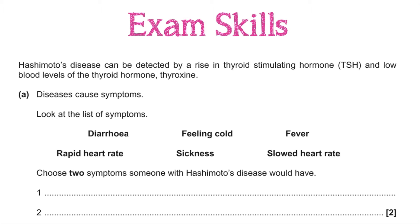What I've got here is an example of one of these application questions. Hashimoto's disease can be detected by a rise in thyroid stimulating hormone TSH and low blood levels of the thyroid hormone thyroxine. Look at the list of symptoms and choose two symptoms someone with Hashimoto's disease would have. Now if this had been on your summer exam paper, I guarantee that by that night on social media there would have been students posting about how their biology teacher never told them about Hashimoto's disease. The reality is we don't have to — because this is a question about thyroxine. Exam papers post questions in unfamiliar contexts, so don't be one of the people who slates their teacher for not teaching about fireflies or a particular disease. The questions are quite obviously about something you have been taught about.